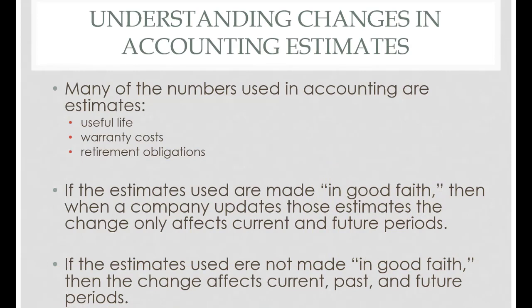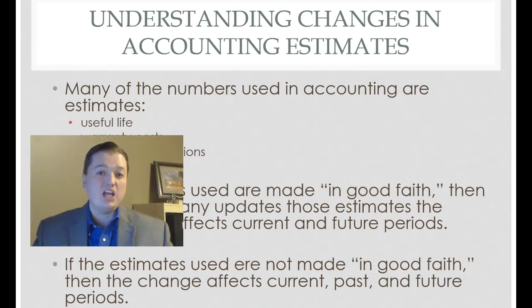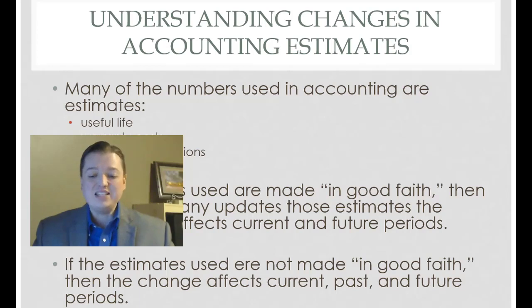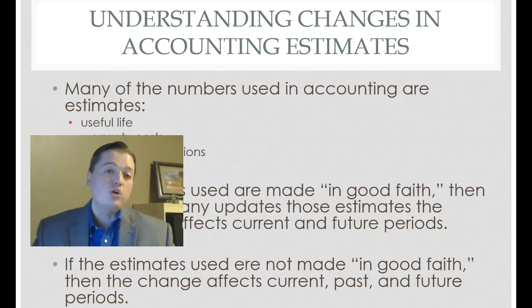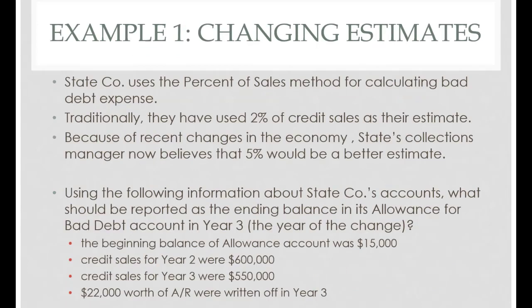Unfortunately from a regulatory enforcement standpoint, there's no way to really prove good versus bad intention without resorting to the court system. So typically when a change of estimate comes up — say you said 10 years for a machine and it's only going to last 6 — you just fix it and move on. We're going to look at State Company and their choice to use the percent of sales method for calculating bad debt expense.